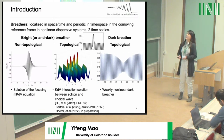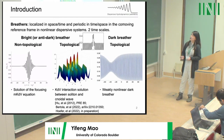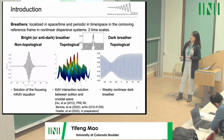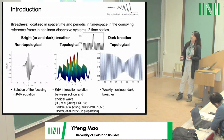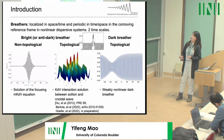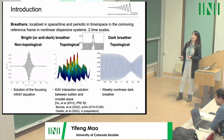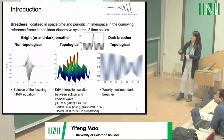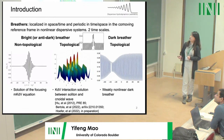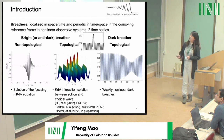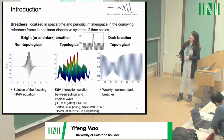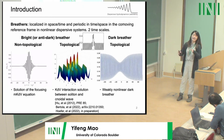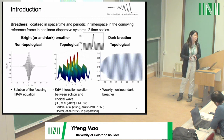The bright breather can also exist on a non-trivial background — the interaction solution of the KdV equation. This is a nonlinear superposition of the soliton on top of a cnoidal wave background, and this is the interaction solution of the KdV equation. We see the spatial structure here is a bright topological type with the background associated with a phase shift. We call this the topological bright breather.